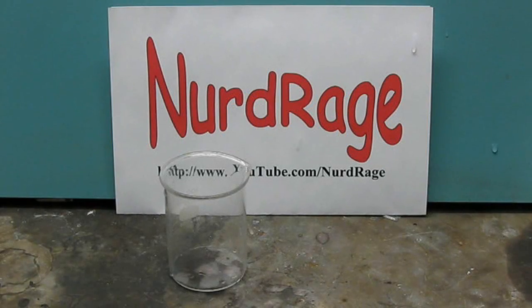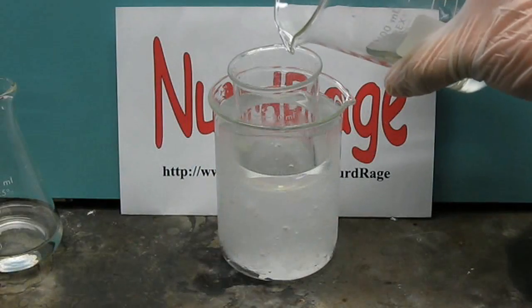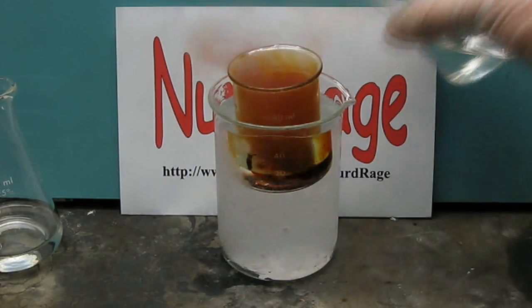Greetings fellow nerds. In this video we'll be showing one way to make iodine from an alkali metal iodide and concentrated sulfuric acid.